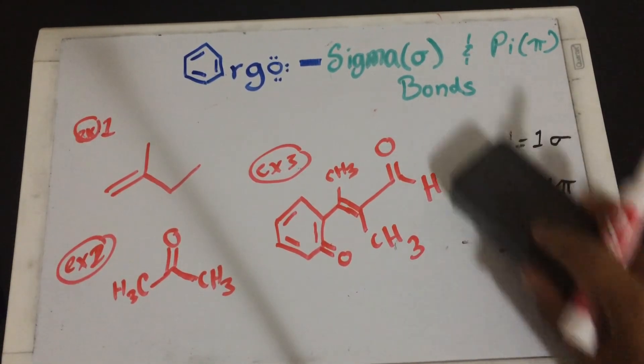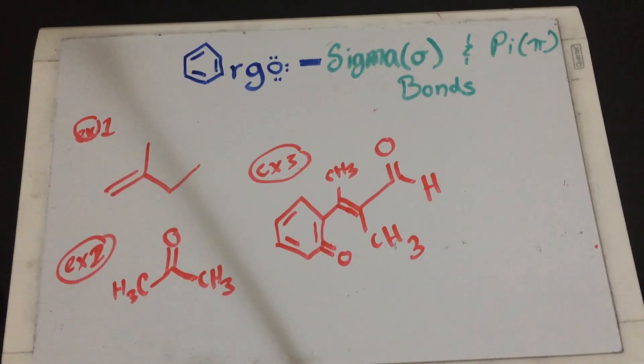Okay, so here are the three examples, example one, two, and three. And all I want you guys to do is just count the number of pi bonds and sigma bonds in each of the following molecules. And that's it. I'll have the answers posted in the comment section below. Like I said, if you have any questions, please leave it. And until then, I'll see you guys next time.